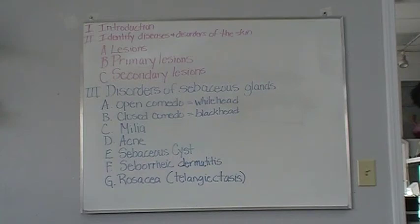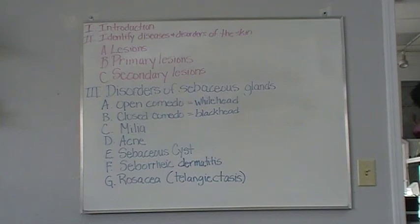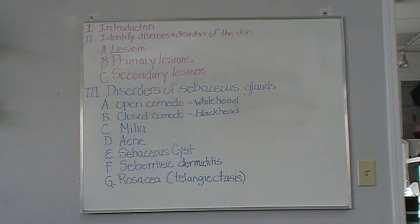Rosacea is a chronic condition that appears on the cheeks and nose, characterized by redness, dilation of blood vessels, and a formation of papules and pustules. Factors that aggravate rosacea are spicy foods, caffeine, alcohol, exposure to extreme heat and cold or sunlight, and stress. You'll notice in the notes that lovely word starting with a T — referring to the dilation of blood vessels — that the instructor chose not to attempt to pronounce. That is the end of the first day of Chapter 8.